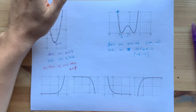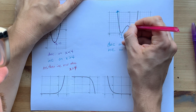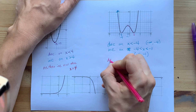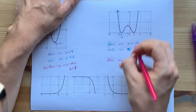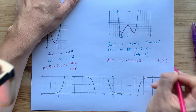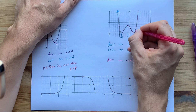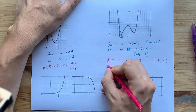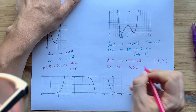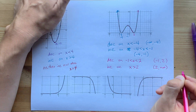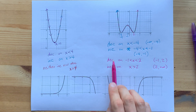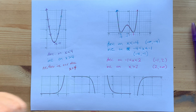Then from negative 1, I'm going down again all the way to 2. So I'm decreasing from negative 1 up to 2. Then from 2, my pencil moves upward forever with no end in sight — x greater than 2, or in interval notation, from 2 up to positive infinity. So the pattern is: decreasing, then increasing, then decreasing, then increasing.